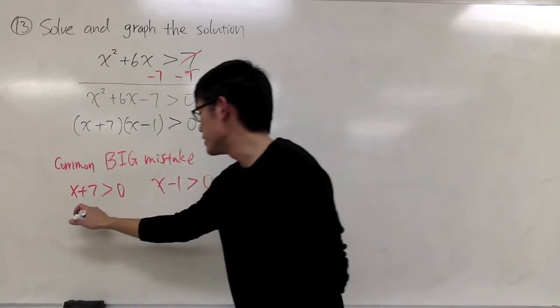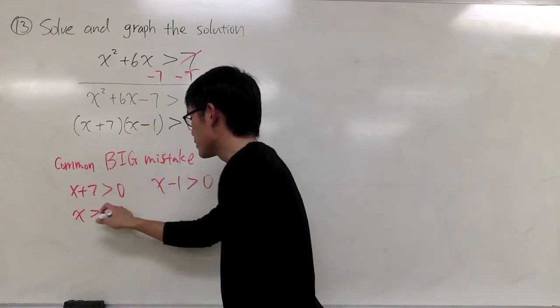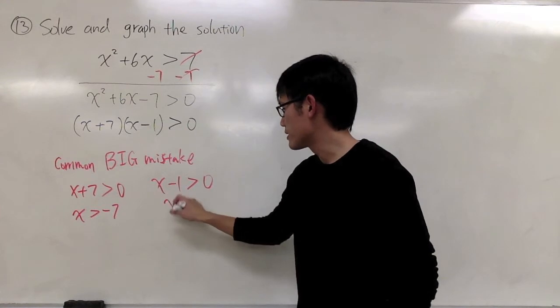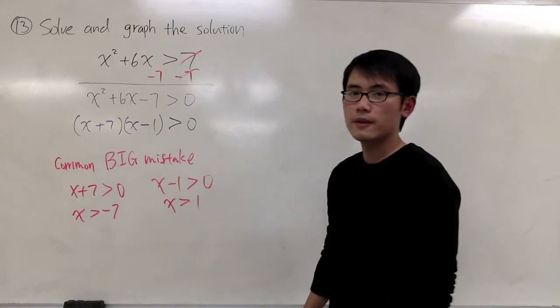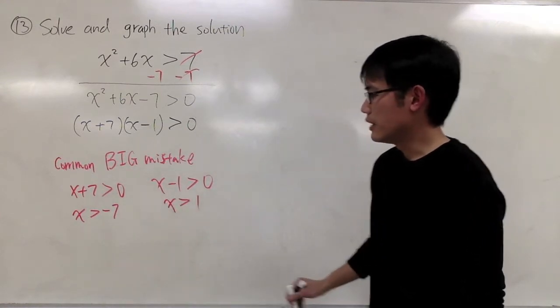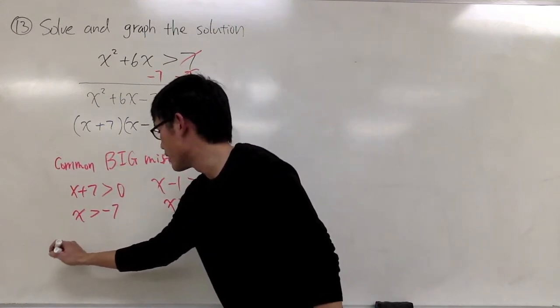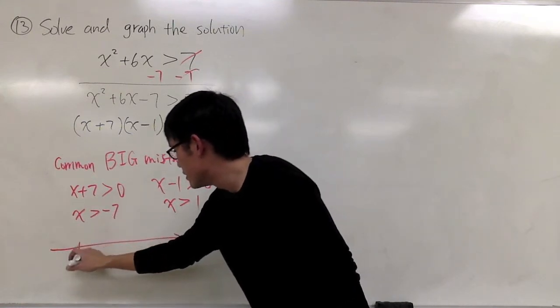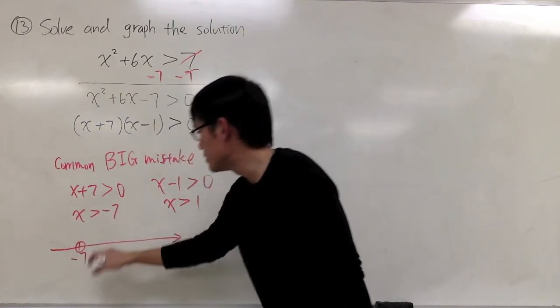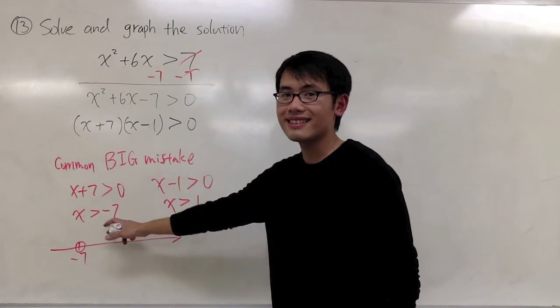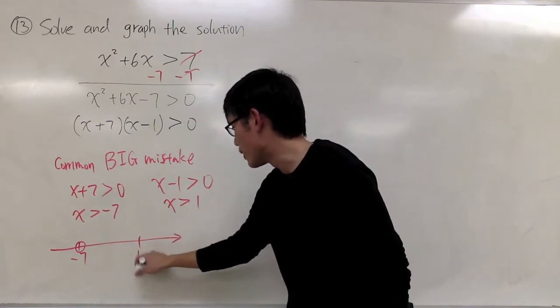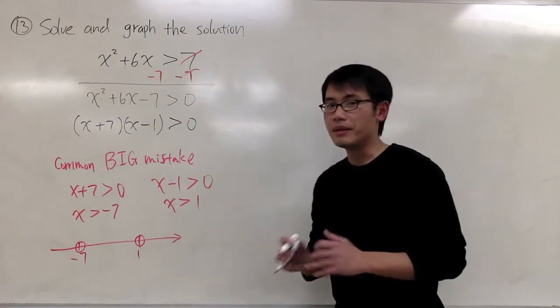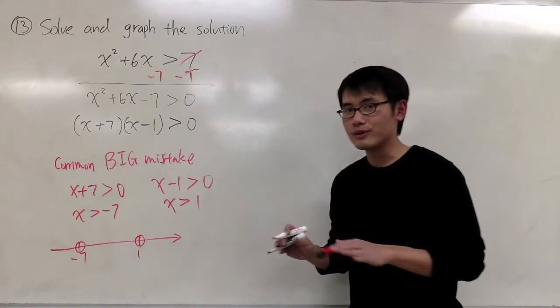And of course, we can solve this easily. Subtracting on both sides, I get x greater than negative 7. And adding 1 on both sides, I will get x is greater than positive 1. Now the problem is, if you really want to graph this, I'll have to figure this out. This is negative 7, open circle because you have a greater than sign. And this is 1 right here. Again, open circle because I have a greater than sign.